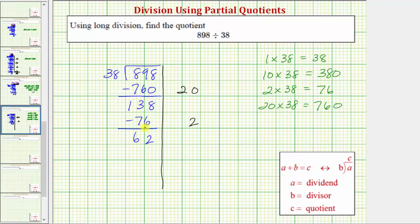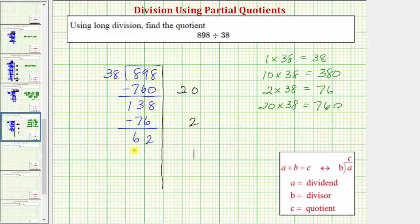And again we repeat the process. We need to determine a certain number of 38s that we know are in 62. Well 38 is less than 62. So there's at least one 38 in 62. So let's use 1 as the next partial quotient. 1 times 38 equals 38.